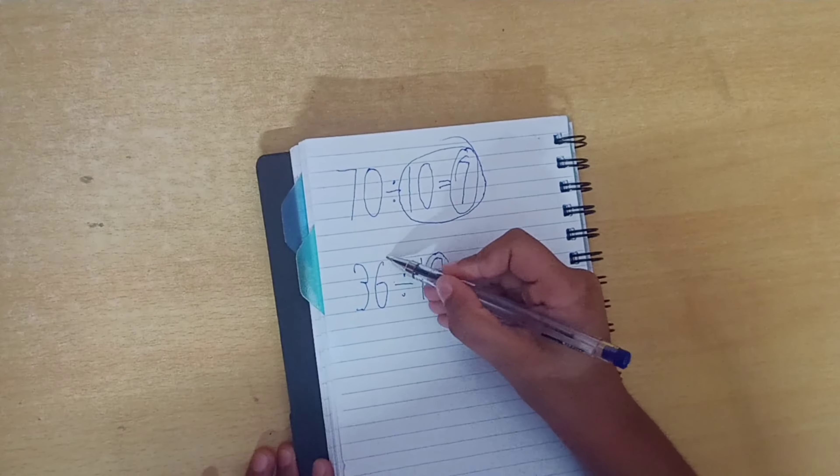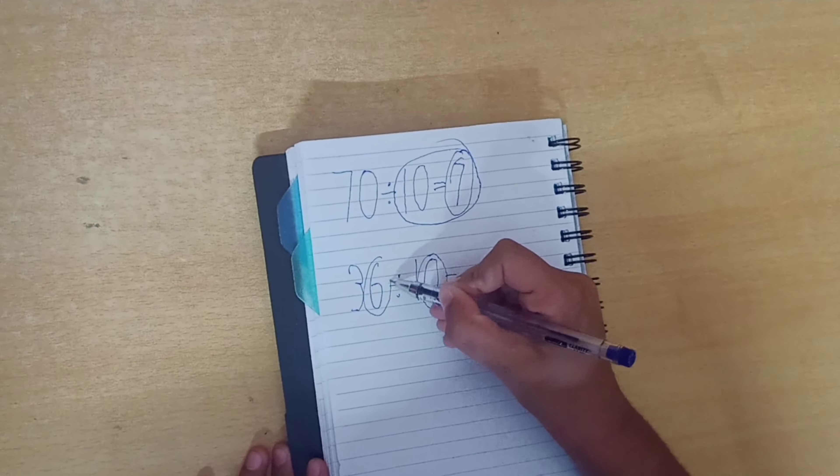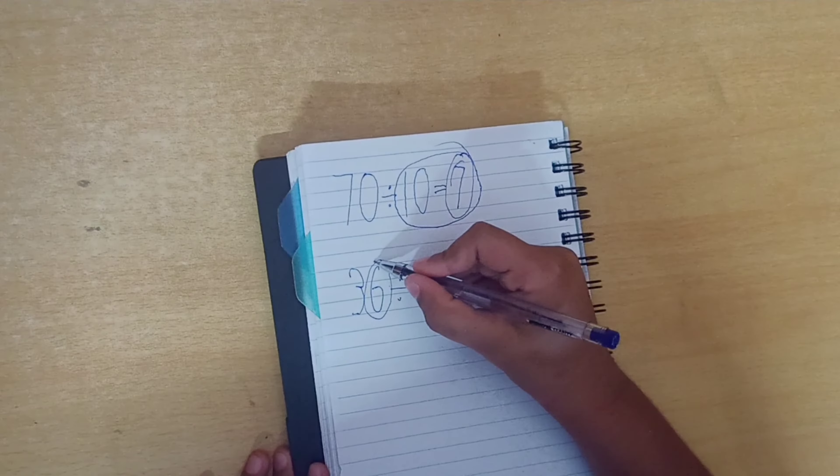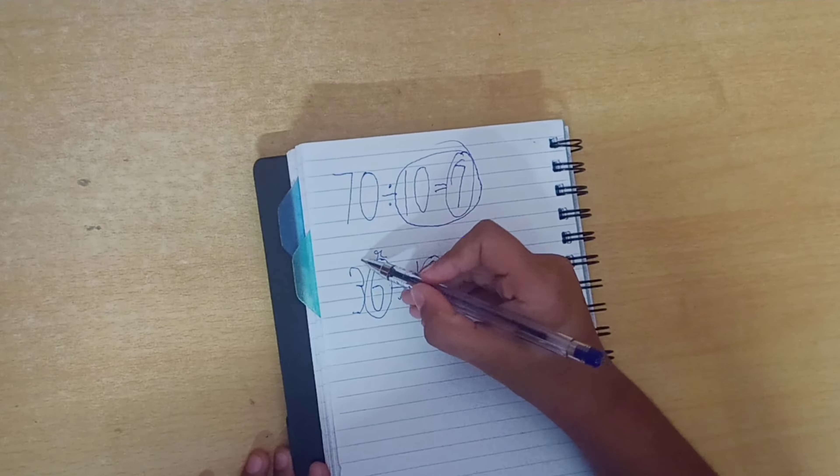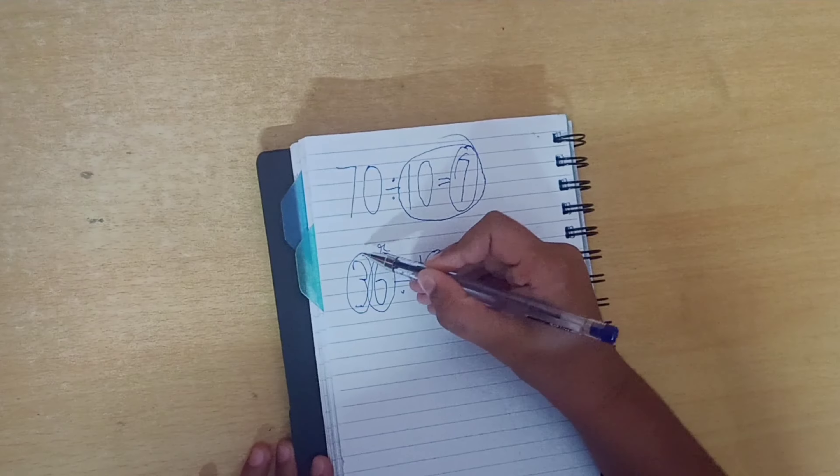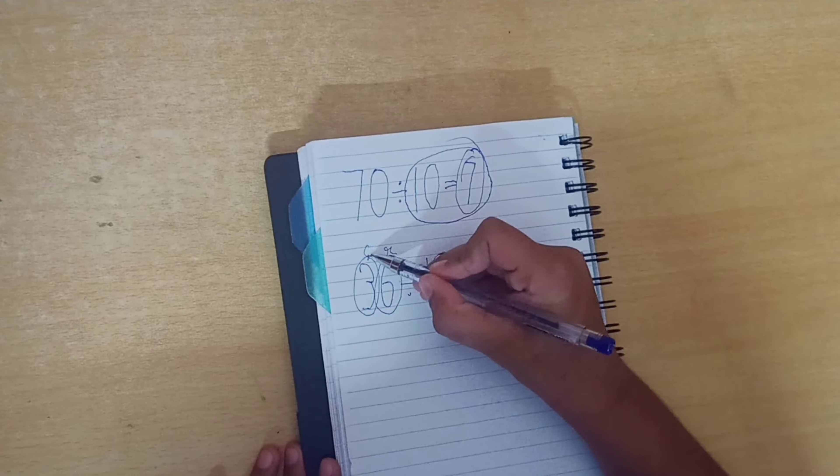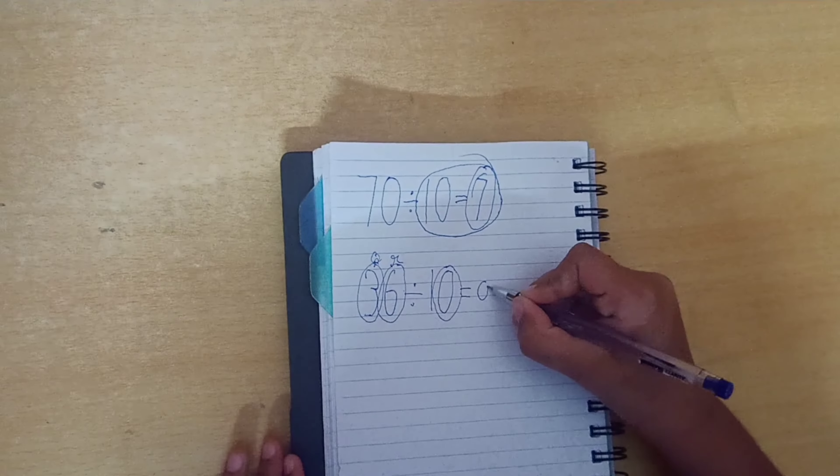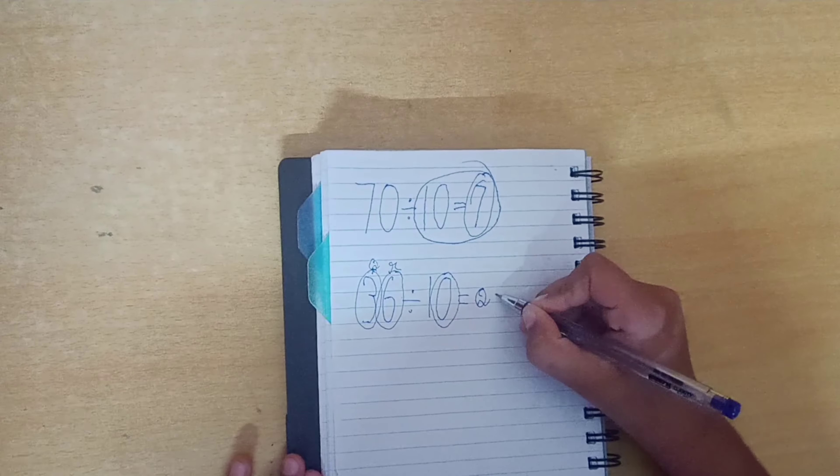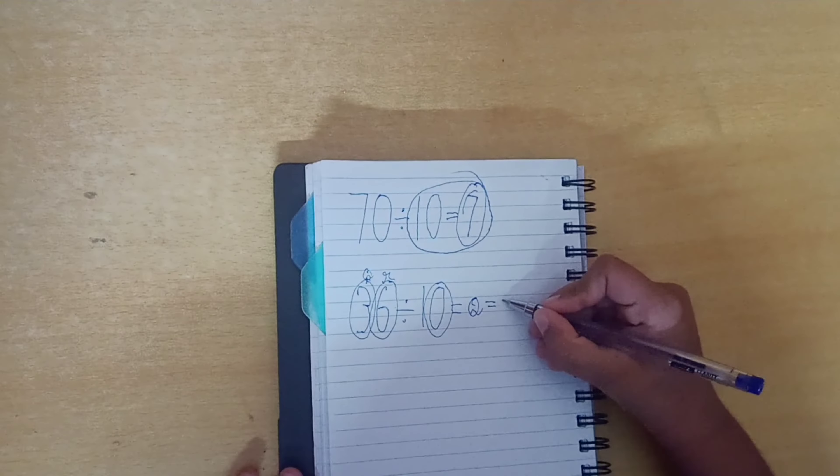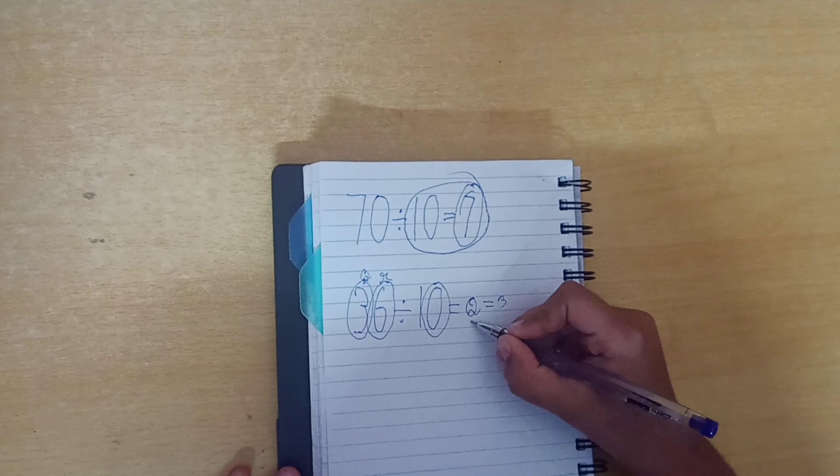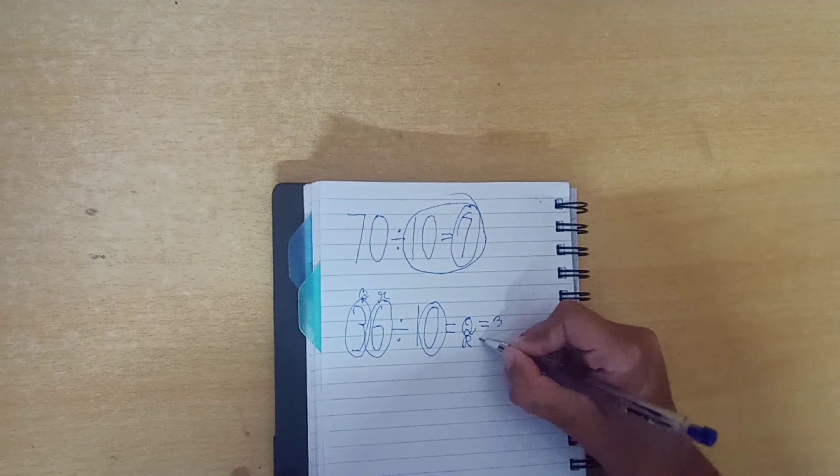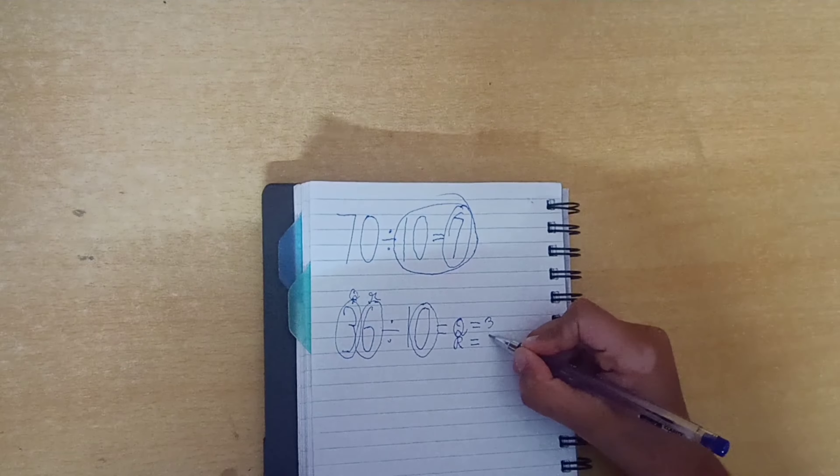the one splice digit will be the remainder. And the other part will be the quotient. So, the answer is quotient equals to 3, and the remainder equals to 6.